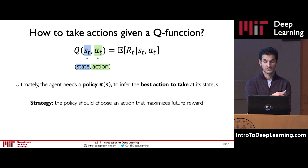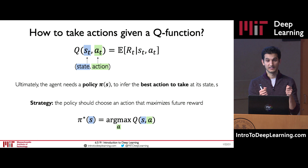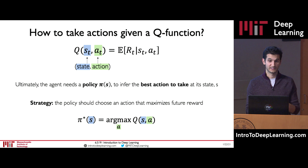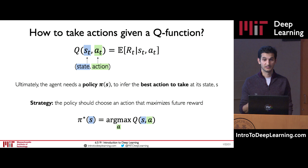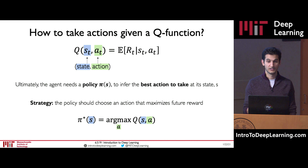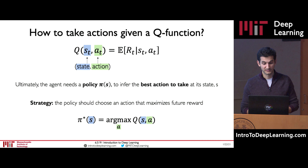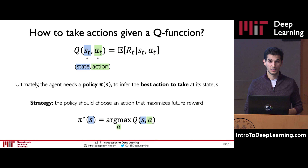By finding the argmax, we identify the action that yields the greatest return on future rewards from the current state. We can define our optimal policy — call it pi-star — which is the argmax: the action that results in the maximum Q value at this state S. So pi-star of S should just be the argmax over all actions of Q(S, A) at this time.